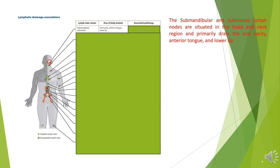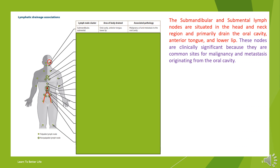The first lymph node cluster: the submandibular and submental lymph nodes are situated in the head and neck region and primarily drain the oral cavity, anterior tongue, and lower lip. These nodes are clinically significant because they are common sites for malignancy and metastasis originating from the oral cavity.